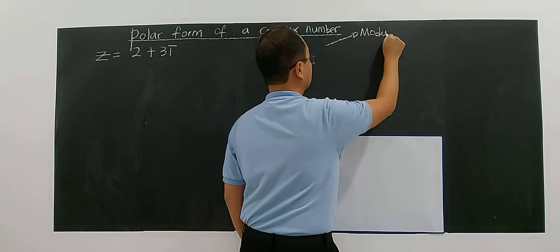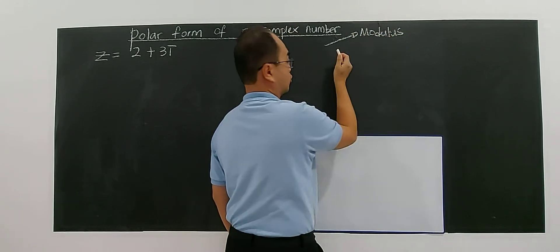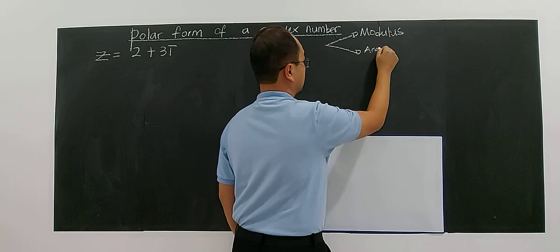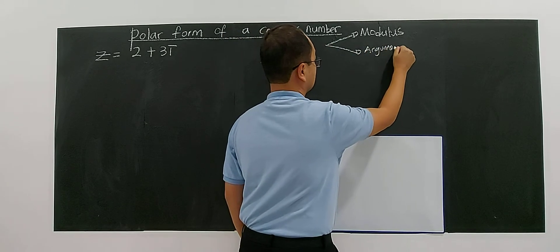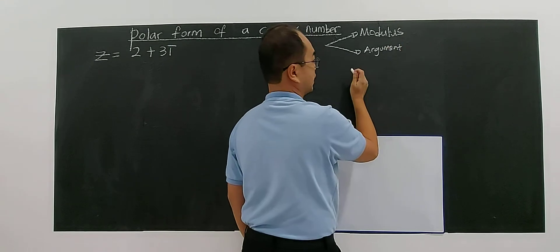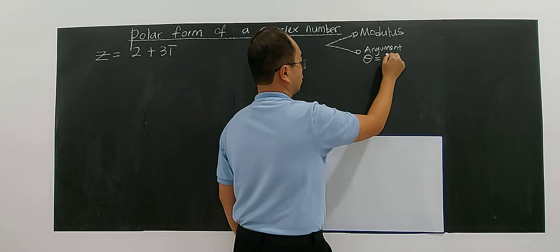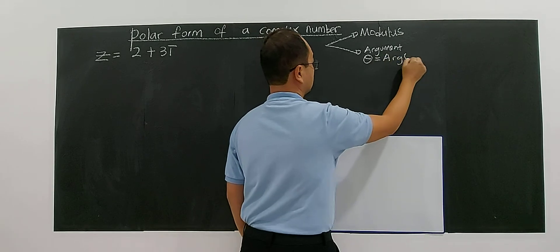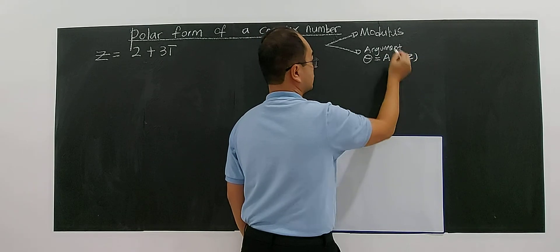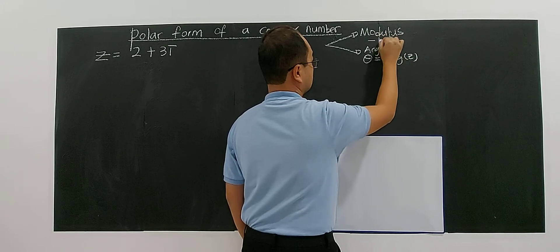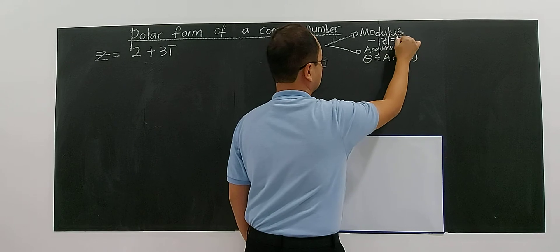The first information is you need to know how to find the modulus and the arguments of the complex number, which we usually denote by theta or write as the argument of z. The modulus is denoted by |z| or the capital letter r.